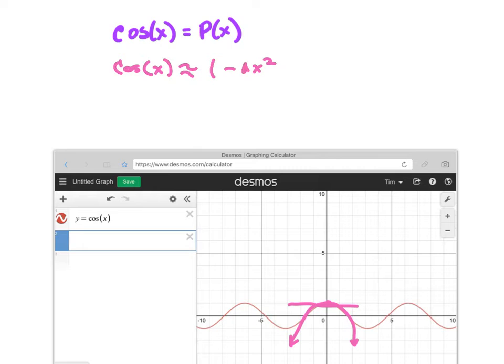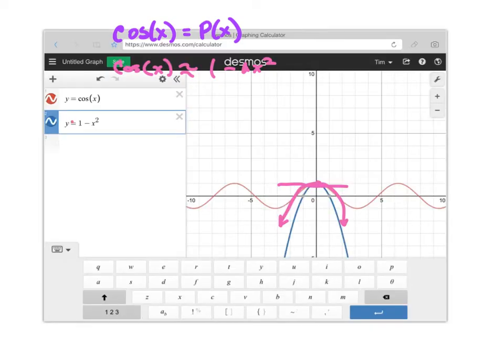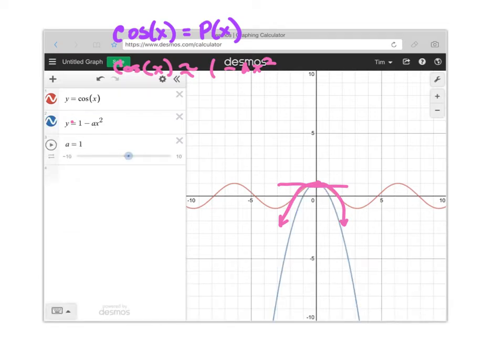We can go to Desmos and put an a in there, and then see if we can try to fit it. This won't be perfect as you go along, but you can get an idea. A lot of them will come up with one half as you go. All you have to do is put an a in there. When you put an a in there, it will show up and say add slider. So I'm going to add slider. Now I can try to fit this, and the kids play around with this. They have a lot of fun.